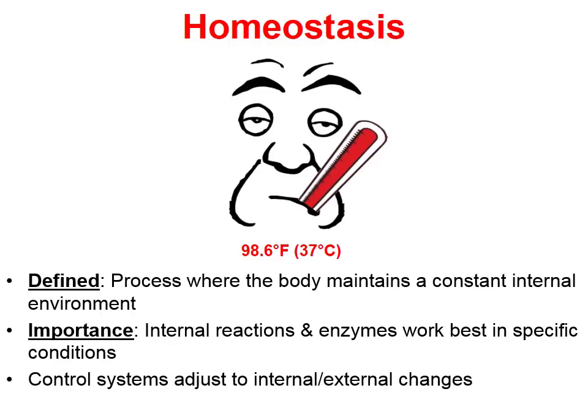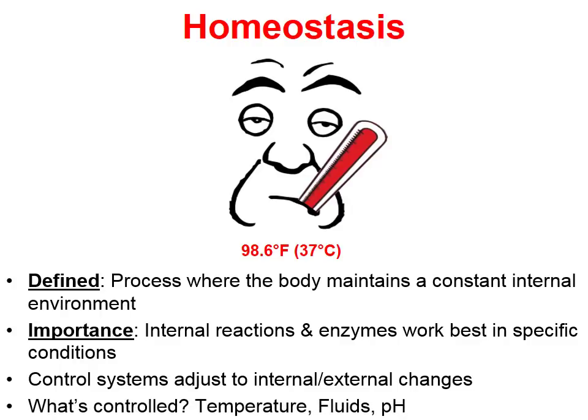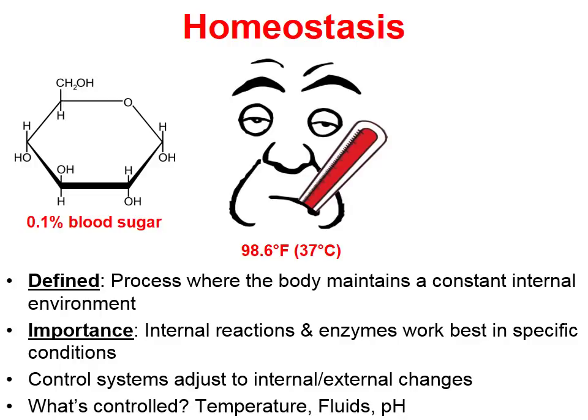So we have control systems in place to adjust our bodies whenever a change is occurring. Besides temperature, which is probably the one that everybody knows, other things that are controlled would be, for instance, our blood sugar.